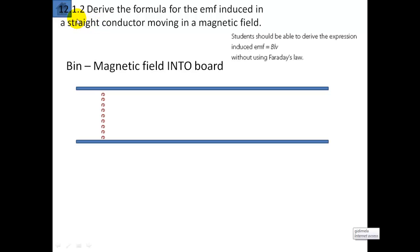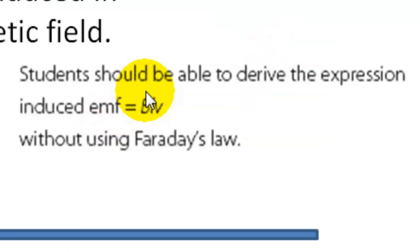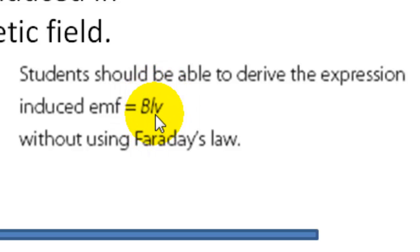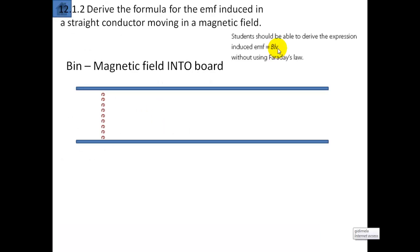Electromagnetic induction, section 12.1.2. You have to be able to derive the following equation, and it takes a bit of time. We need to derive the formula for the EMF induced in a straight conductor moving in a magnetic field. This equation is: EMF equals BLV, where B is the magnetic field strength, L is the length of the straight conductor, and V is the velocity at which it travels.